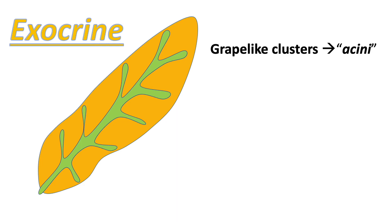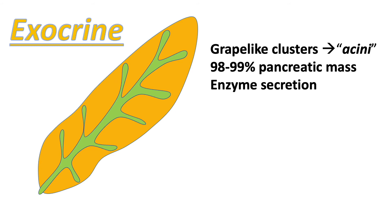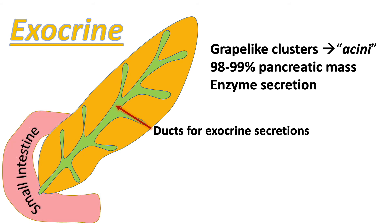The exocrine cells are in grape-like clusters called acini. These exocrine cells make up approximately 98 to 99 percent of the pancreatic mass — a large portion of the pancreas. As highlighted earlier, their main function is enzyme secretion. These enzymes are secreted into the ducts and eventually make their way into the duodenum, the first component of the small intestine, where they aid in digestion.